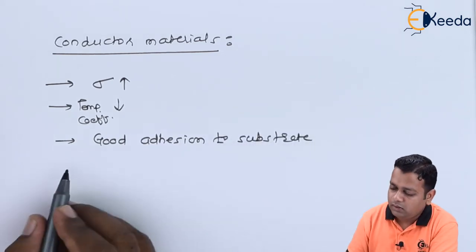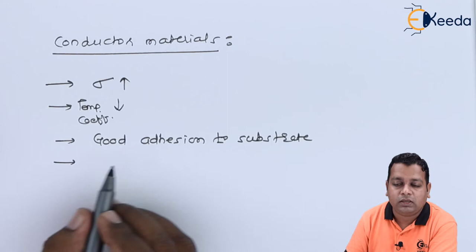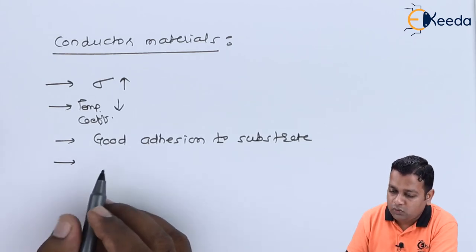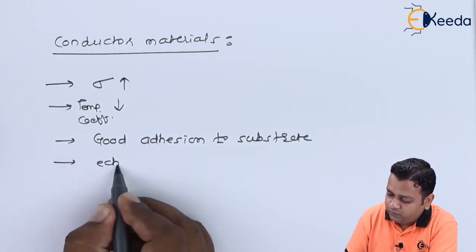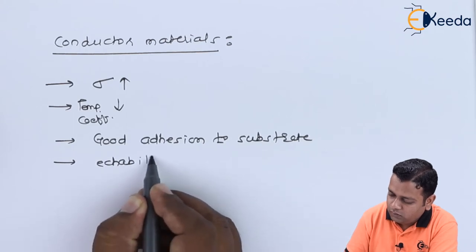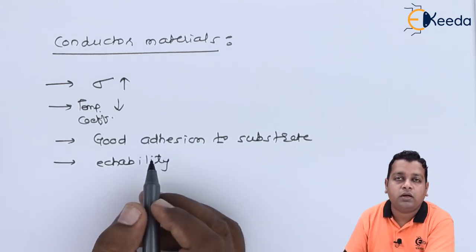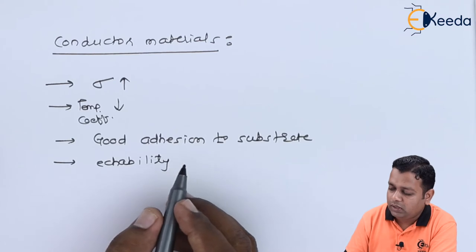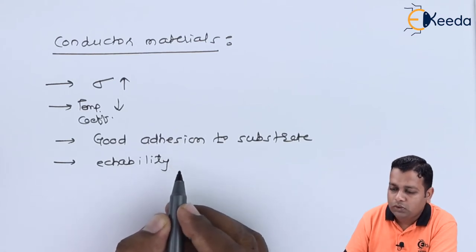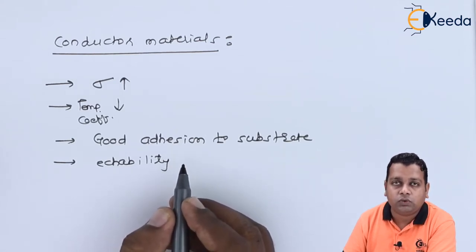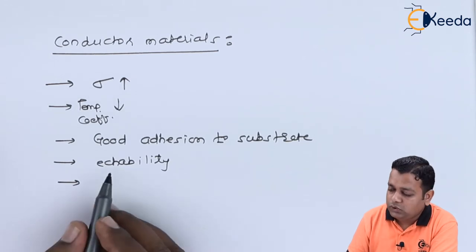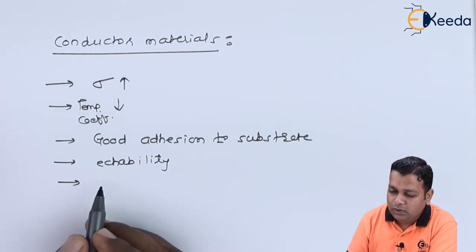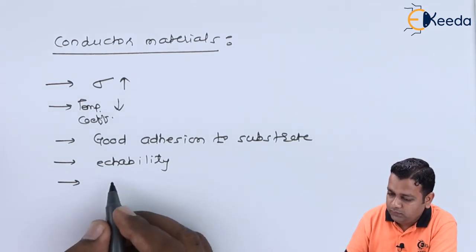Conductor materials should also have good adhesion to the substrate, along with good etchability which is required during fabrication. The solderability should also be good, and lastly, they should be capable of easy deposition and electroplating.